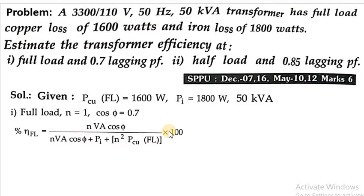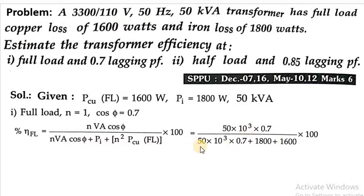So n equals 1, VA rating is 50 × 10³, cos φ is 0.7, iron loss is 1800 watts, and n² equals 1, so P_cu at full load is 1600 watts. Substituting: (1 × 50 × 10³ × 0.7) divided by (1 × 50 × 10³ × 0.7 + 1800 + 1600) times 100.